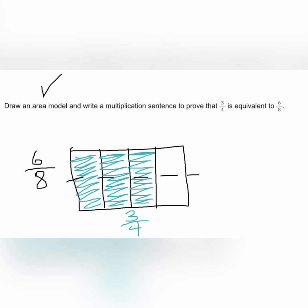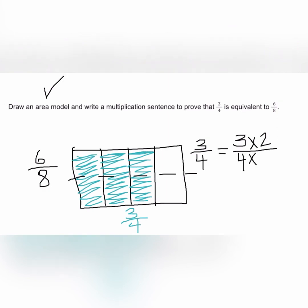Now let's write this as a multiplication sentence. We start with our original fraction, so we'll write three fourths equals three fourths times two. The reason we're multiplying by two is because we partitioned our area model into two parts to break it into eight.